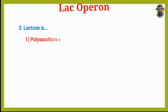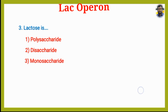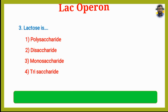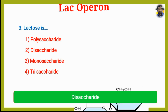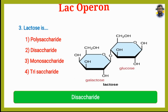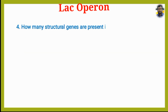Lactose is which type of sugar? Option 1: Polysaccharide. Option 2: Disaccharide. Option 3: Monosaccharide. Option 4: Trisaccharide. The answer is Option 2, Disaccharide. Here is glucose and galactose combining to form lactose disaccharide.